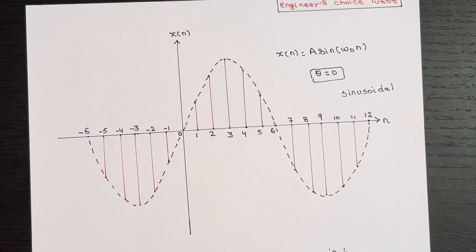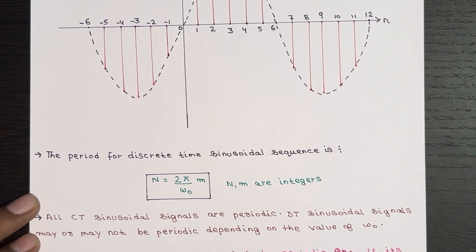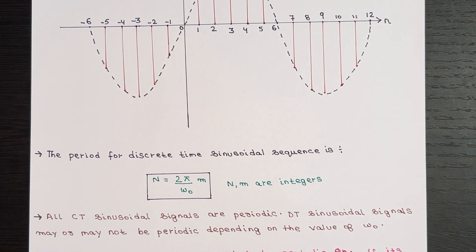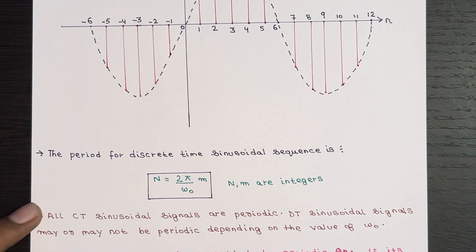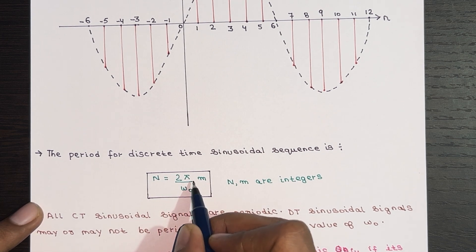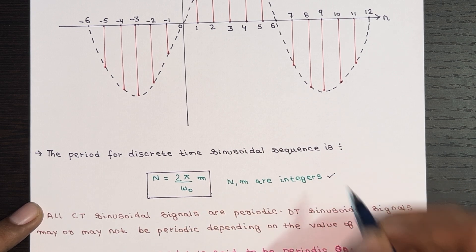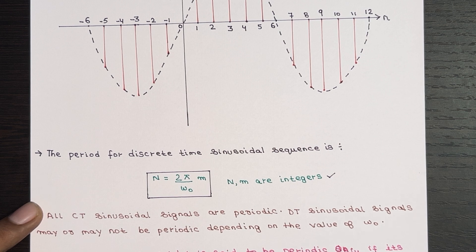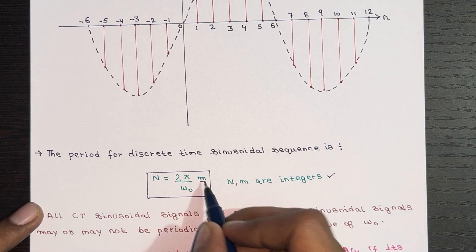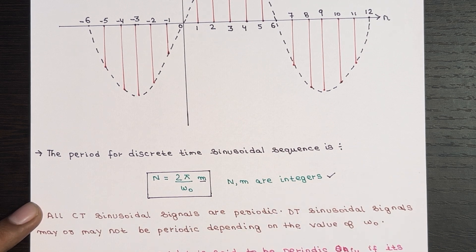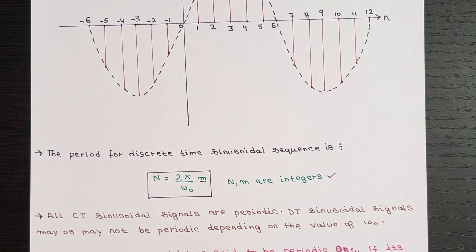Now let's move on to the period of a discrete time sinusoidal sequence. The period can be calculated using the formula N = (2π / ω₀) · m, where N and m are integers.